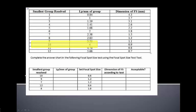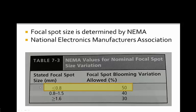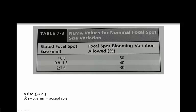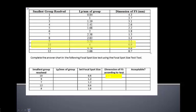Table 73 in your textbook is important for your exam. Focal spot size variation is determined by NEMA — the National Electronics Manufacturers Association. For focal spots smaller than 0.8 mm, the allowed variation is 50 percent. So if the nominal focal spot is 0.6 mm, 50% of that is 0.3 mm, meaning the acceptable range is 0.3 to 0.9 mm. In the earlier example where we measured 0.9 mm, that is just barely acceptable.